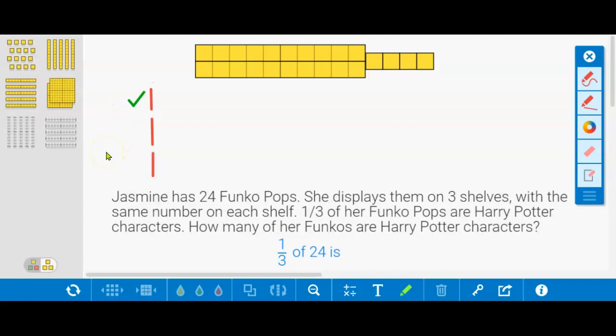At the top, of course. And I helped you by putting the correct number of number pieces on the mat already. We have 10, 20, 1, 2, 3, 4, 24 number pieces representing the Funko Pops.